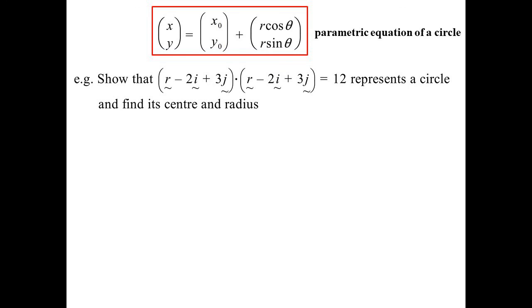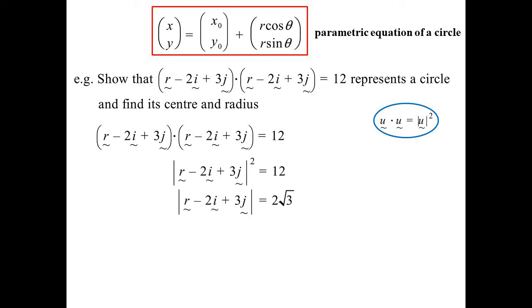All right, so let's show that this dot product actually represents a circle. All right, dot products. We'll notice both vectors are the same. So that's the same as the magnitude of the vector squared. So we have R minus 2i plus 3j. There's the magnitude. So the center, I don't have to bother to work it out in the Cartesian form, because it's now in that form of the modulus of a vector minus the center is equal to the radius.